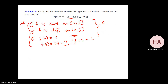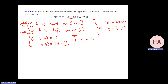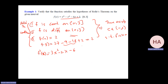There exists at least one c between 0 and 3 such that f prime at c equals 0. f prime of x is 3x squared minus 2x minus 6. Setting equal to 0, I can't factor it, so I use the quadratic formula.